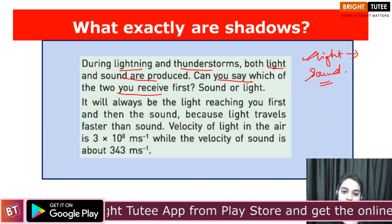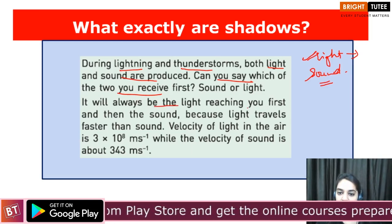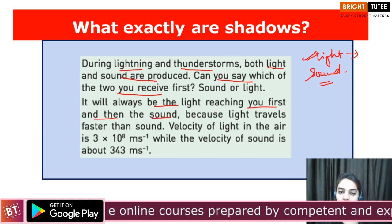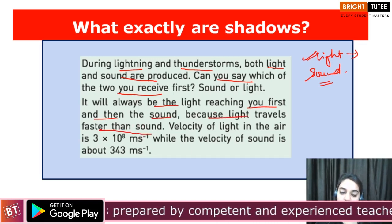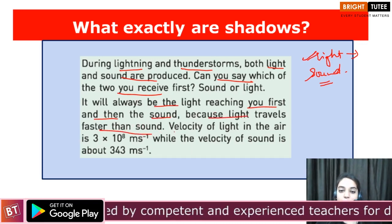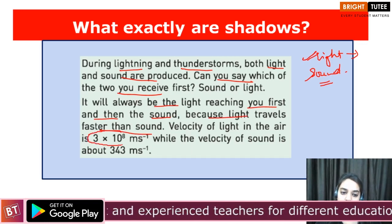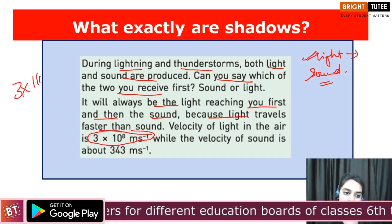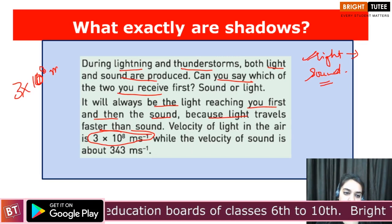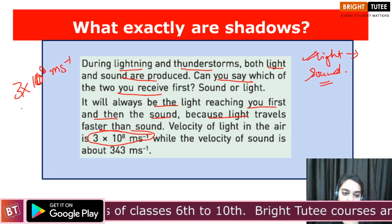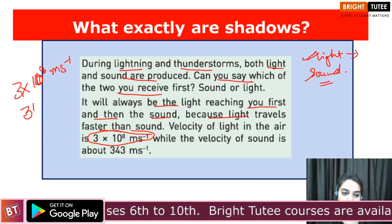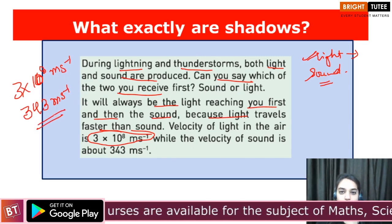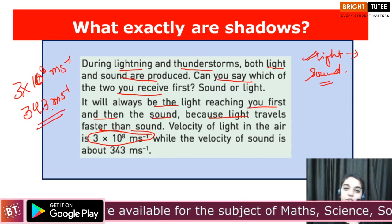It will always be the light reaching you first — because the light travels faster than sound. The speed of light is 3 × 10⁸ meters per second, whereas the speed of sound is 343 meters per second, and therefore the light will always reach you first.